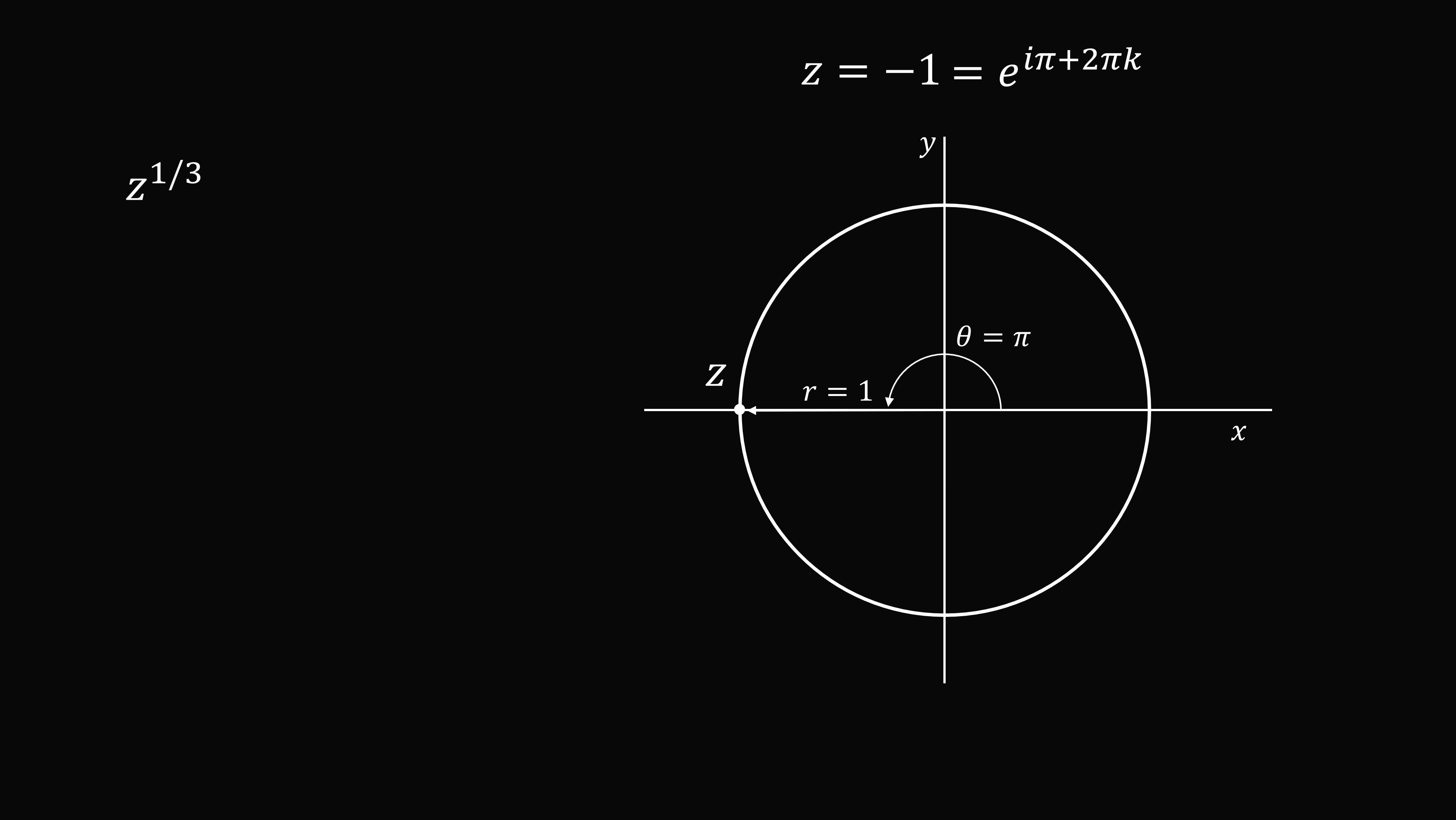We now want z to the power of 1 over 3. So this will be the set of three roots. This works out to be the cube root of 1 multiplied by e to the power of i multiplied by the angle pi over 3 plus 2 pi k over 3. We get distinct roots for k is equal to 0, 1, and 2.